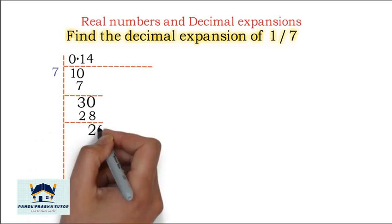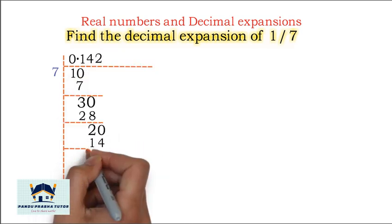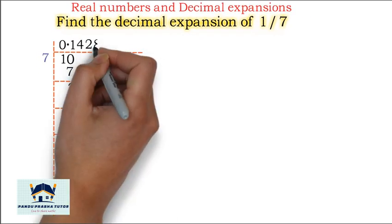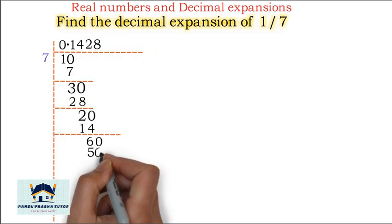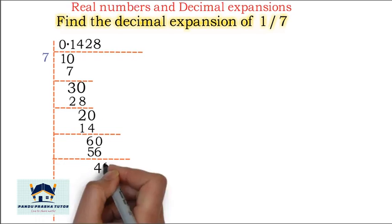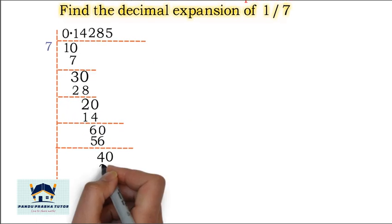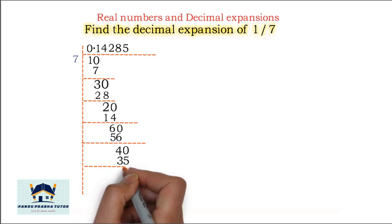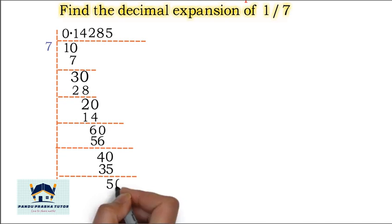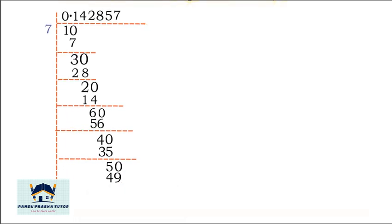Take 0: 7 times 2 is 14, remainder is 6. Take 0 again: 7 times 8 is 56, subtract to get remainder 4. Take 0: 7 times 5 is 35, remainder is 5. Take 0: 7 times 7 is 49, remainder is 1.